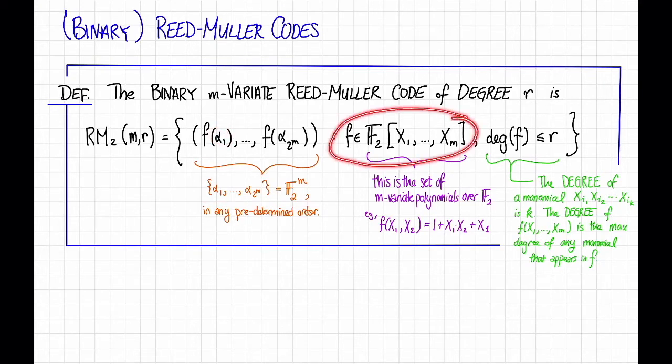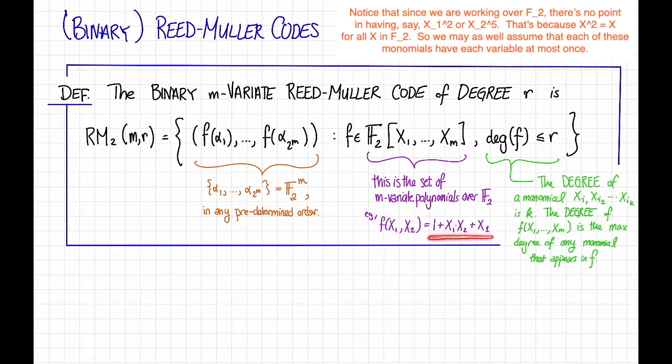F is an M-variate polynomial. For example, F of X1 comma X2 is a bivariate polynomial. It has two variables, and then I'm allowed to have monomials which are any mixtures of these different variables. The degree of a polynomial F is just the largest degree of any monomial that appears in it, and the degree of a monomial with K terms in it is just K.